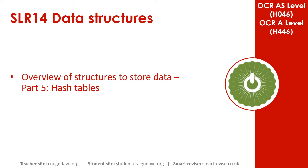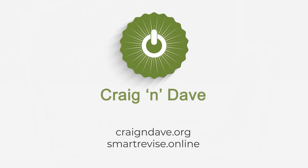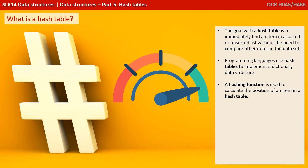This is our final video in our five-part series overviewing data structures. In this video, we take a look at hash tables. The goal of a hash table is to immediately find an item in a sorted or unsorted list without the need to compare other items in the dataset. Programming languages use hash tables to implement a dictionary data structure. A hashing function is used to calculate the position of an item in a hash table.